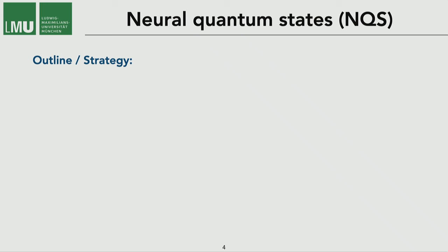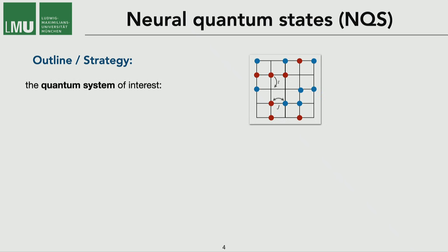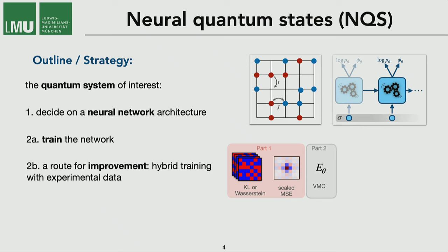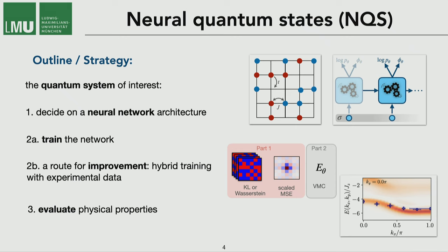The typical strategy that we follow is as follows. We have our system of interest that we want to simulate. First of all we have to decide on a neural network architecture. Then we need to train the architecture which is typically very challenging. And that's why I will point towards the route for improvement which are hybrid training strategies where we can use experimental data. And at the end we want to get some physics out of the neural quantum state.